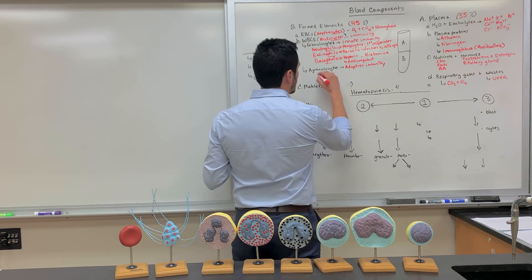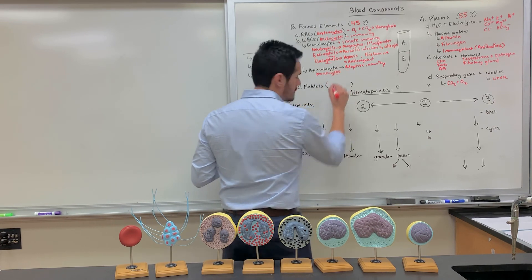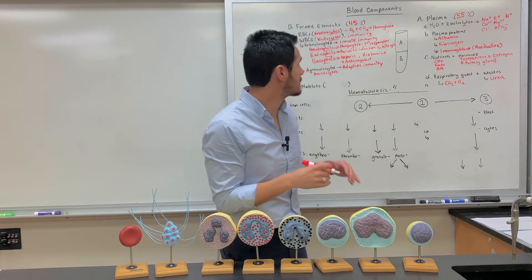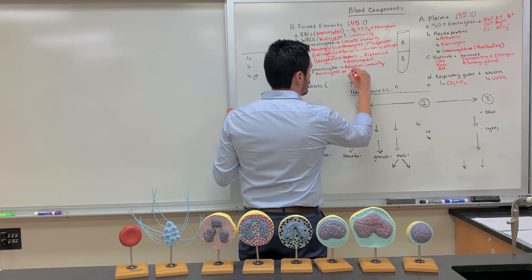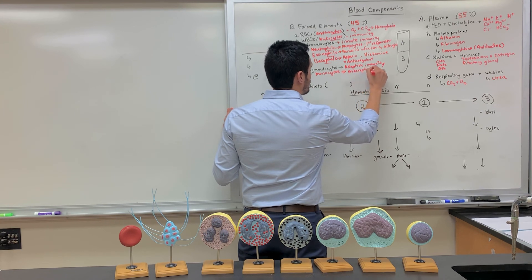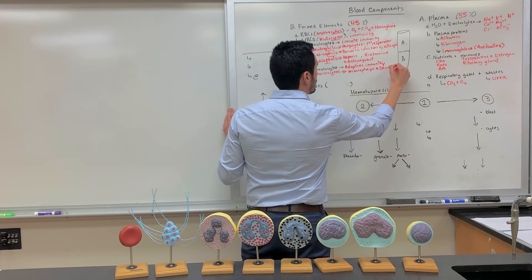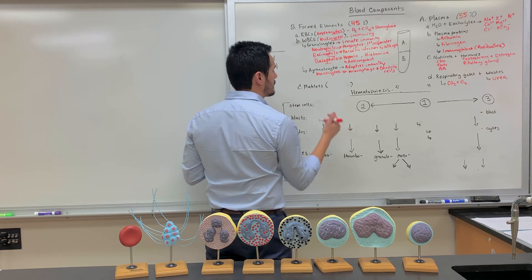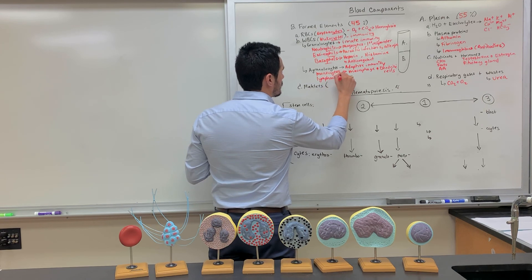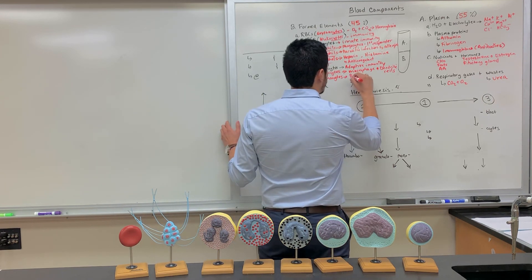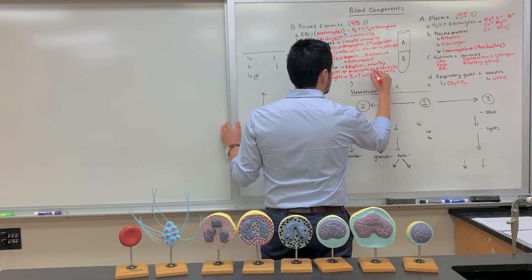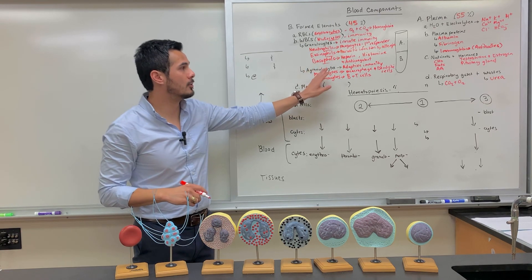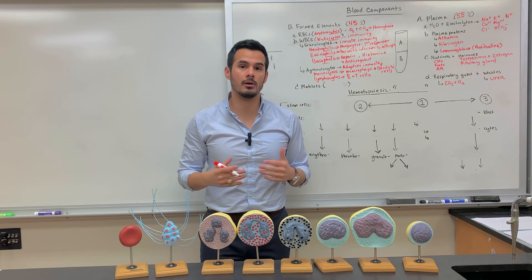Moving on to agranulocytes: you have monocytes, which can differentiate into macrophages as well as dendritic cells. The last agranulocyte type is lymphocytes — you have B cells and T cells, also known as B and T lymphocytes. That covers blood components, and in the next lecture we'll go over hematopoiesis.